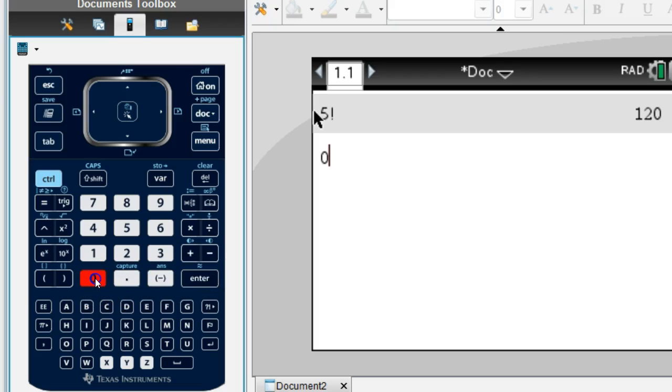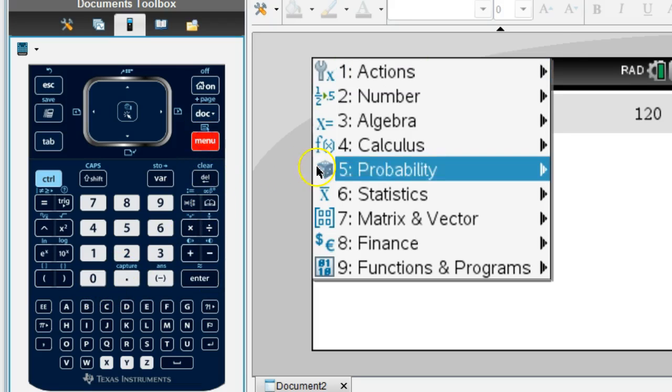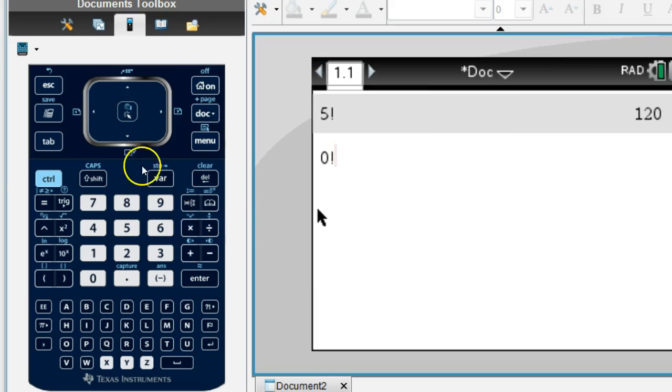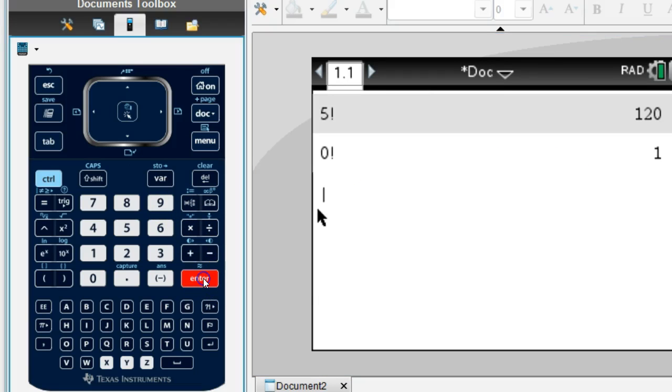Or maybe we want to do 0 factorial. So 0, Menu, Probability, Factorial, hit Enter, and it's 1. So there you have it.